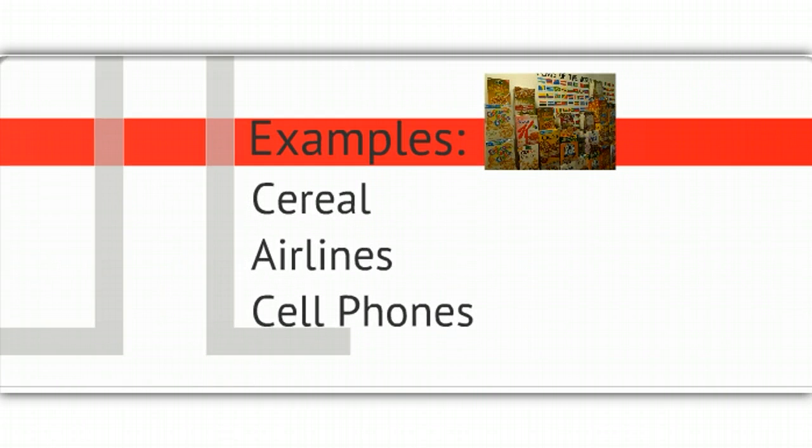Examples would be something like cereal. Now, I know when you go to the grocery store, you see 50 different cereals, but look at the companies that are making those cereals. There are just four main ones. There's Kellogg's, Post, Quaker, and General Mills. And there's some other smaller ones, but really those are the major ones. Airlines, cell phone companies by like cell phone plans like AT&T, Verizon, Sprint. Each of these industries have a small amount of businesses.